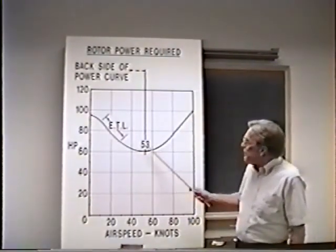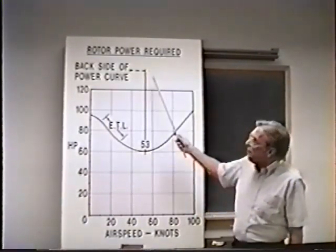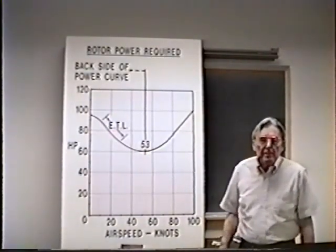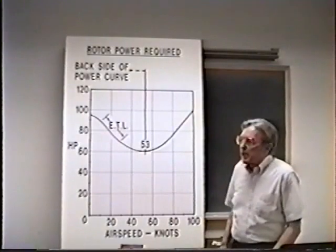If I draw a vertical line to that point at 53 knots, I can arbitrarily define everything to the left of that line as the backside of the power curve and everything to the right as the front side of the power curve.